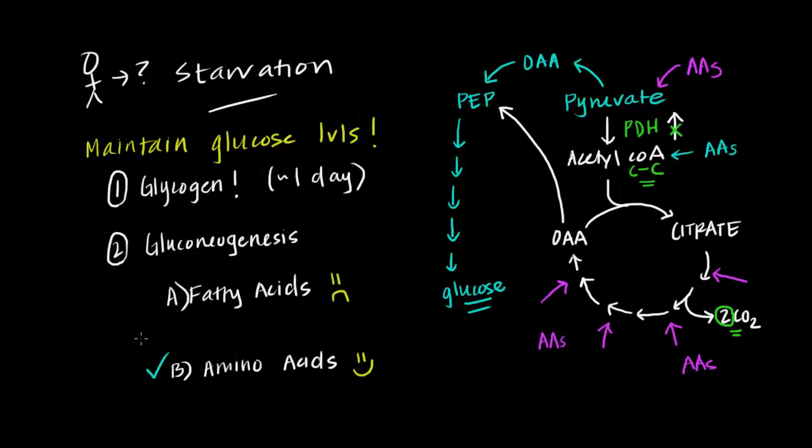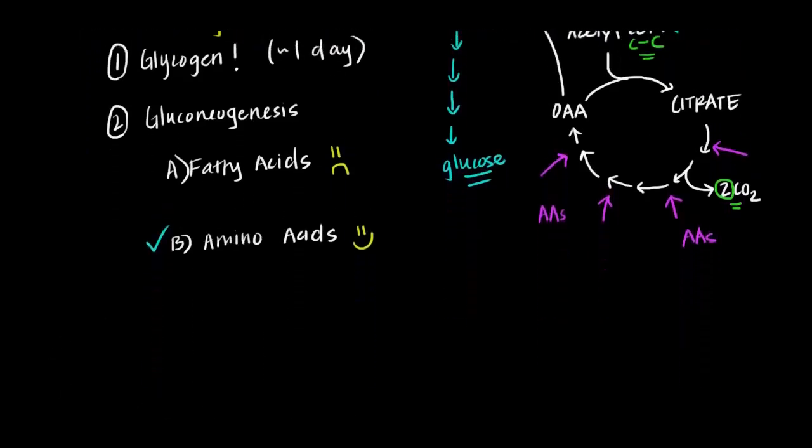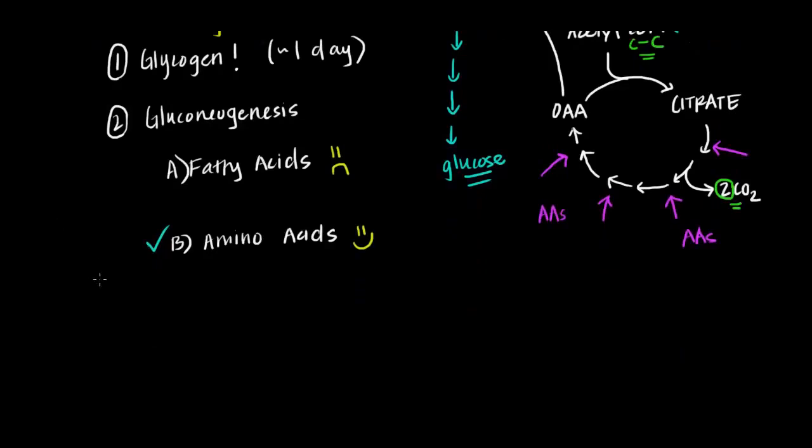We need our enzymes to be performing their activities inside of our cells. So that's why in states of prolonged starvation, our body comes up with another golden rule: to save our protein. We don't want to waste our protein in the production of glucose.